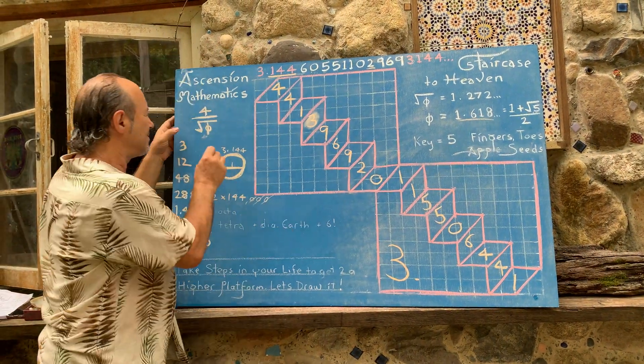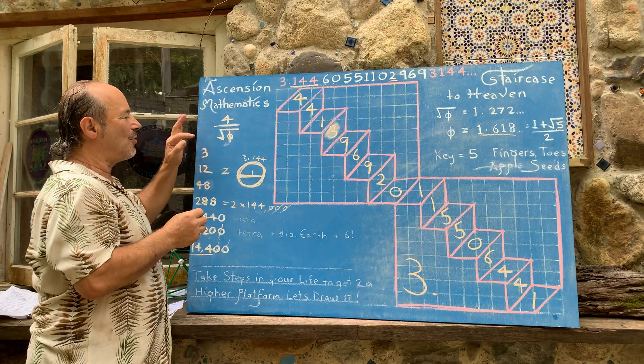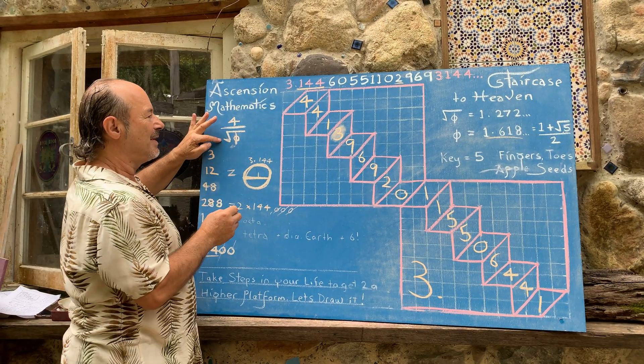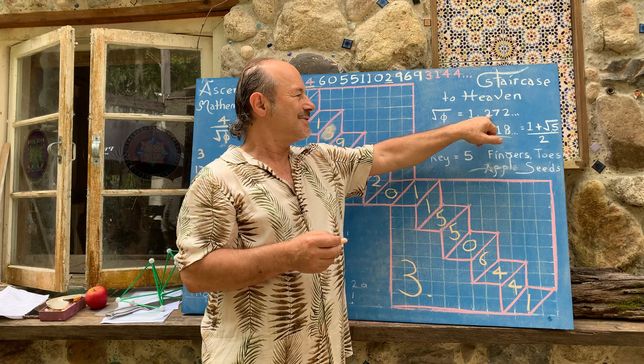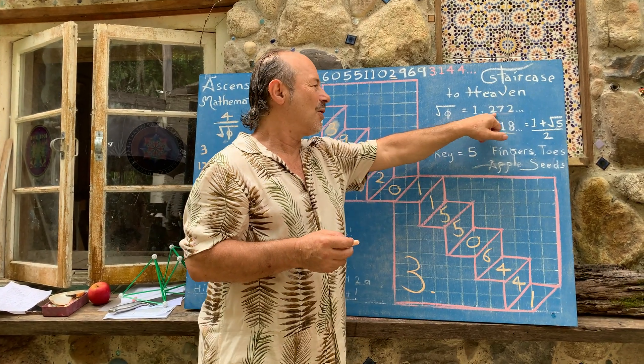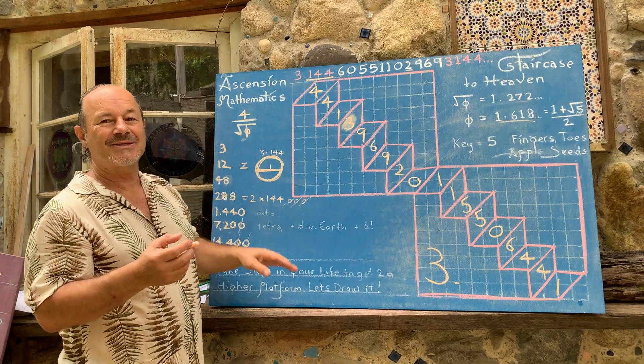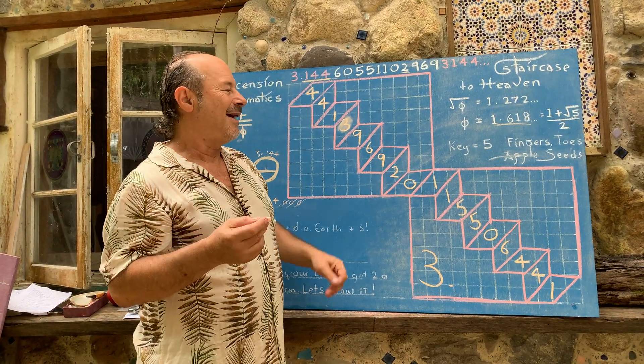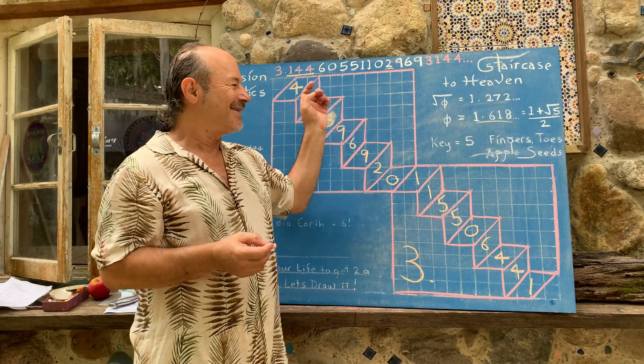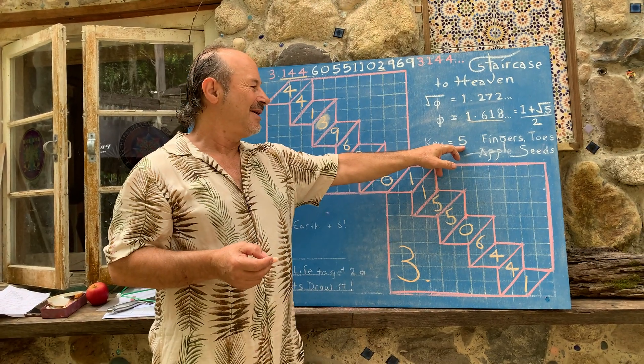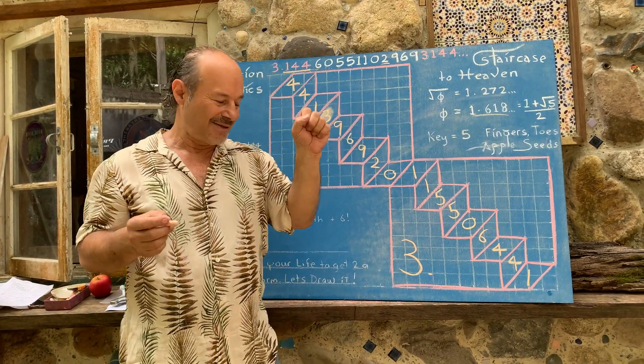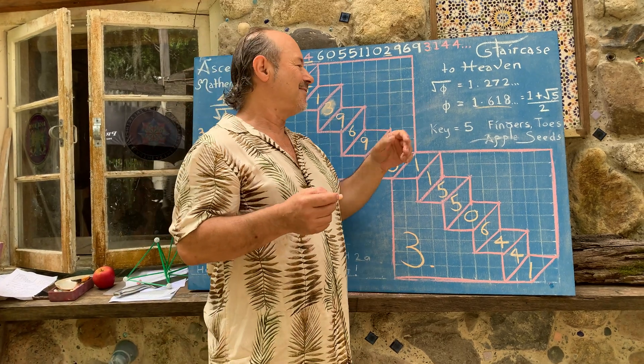But we want the square root of phi, which is called the golden root. So the golden root is this one here 1.272. So what I'm trying to say is that we can't understand pi unless we understand phi. And we can't understand phi unless we understand the number five. And that's why we have five fingers and five toes on each hand and foot.